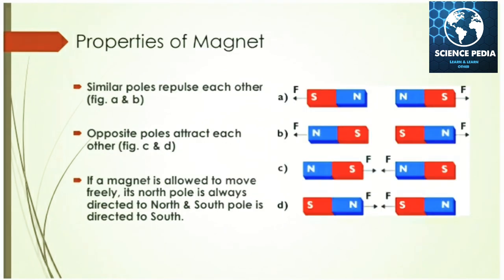Properties of magnets: similar poles repel each other and opposite poles attract each other. If a magnet is allowed to move freely, its north pole is always directed to the north and its south pole to the south.